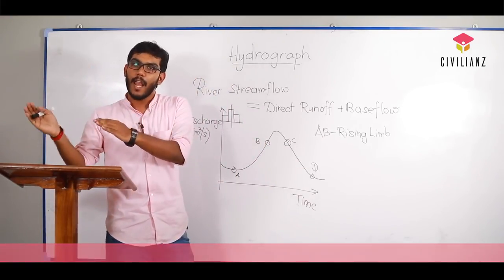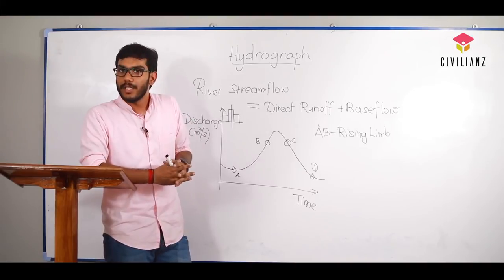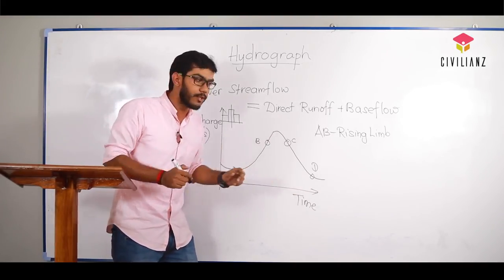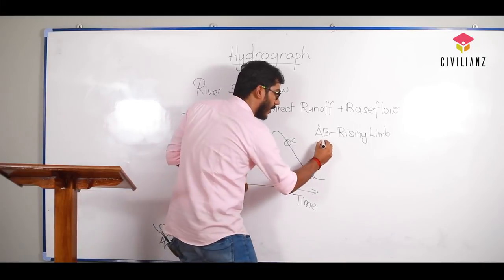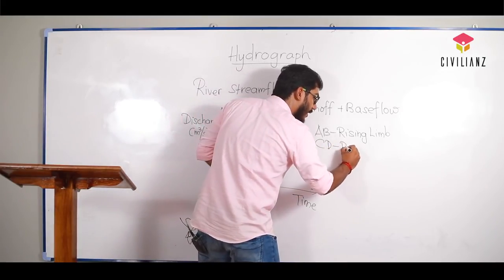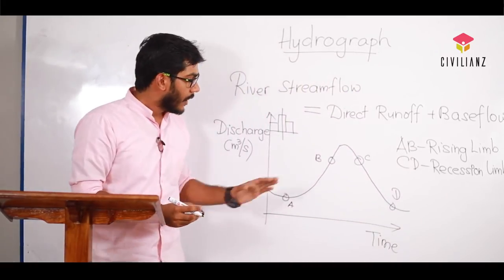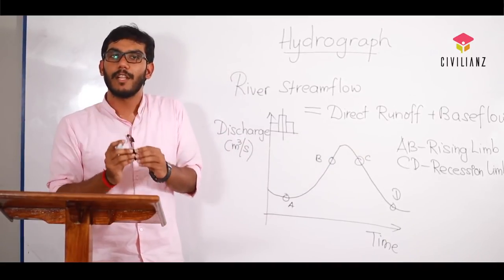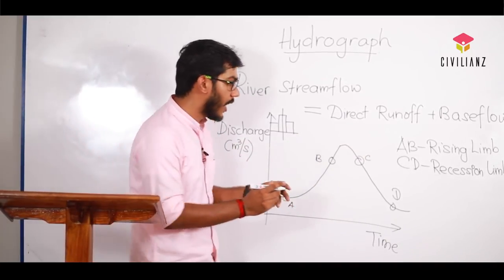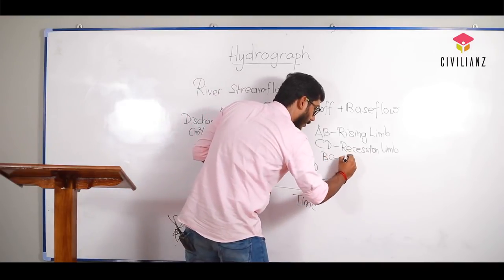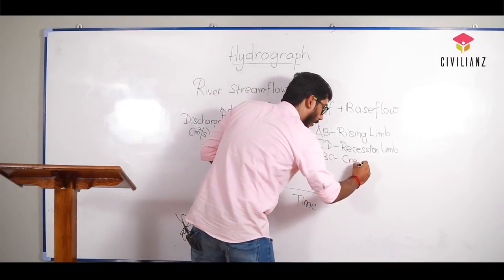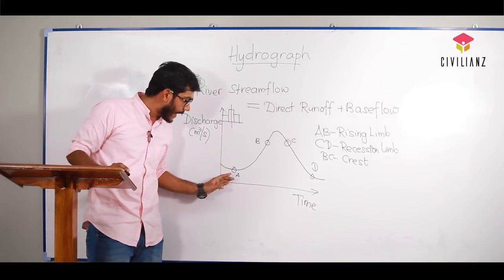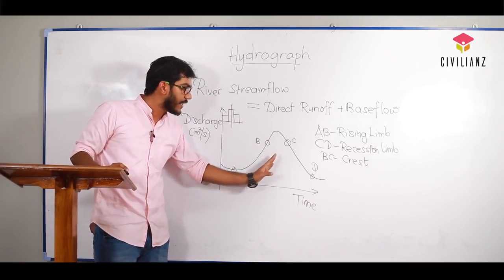After the peak, you can join the river flow back to the base flow — that portion is at the sea level, and it is called the recession limb. The maximum level is reached at point BC, and that portion is called the crest. So the typical hydrograph shape has AB as the rising limb, BC as the crest, and CD as the recession limb.